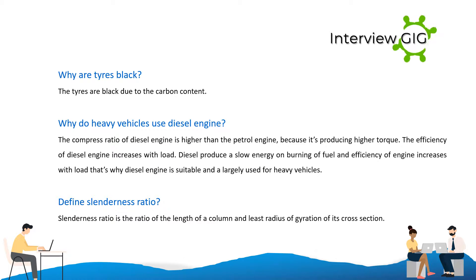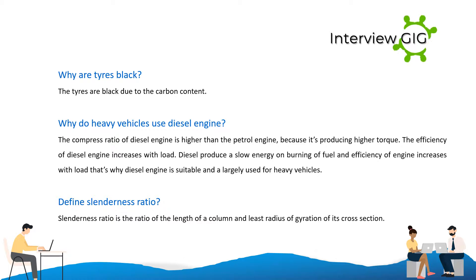Why are tires black? Tires are black due to their carbon content. Why do heavy vehicles use diesel engines? The compression ratio of a diesel engine is higher than a petrol engine, producing higher torque. The efficiency of a diesel engine increases with load, and diesel produces slow energy on burning of fuel, which is why diesel engines are largely used for heavy vehicles.